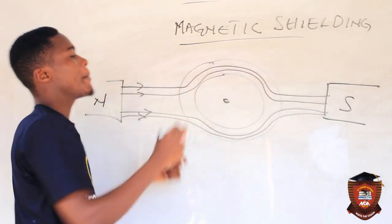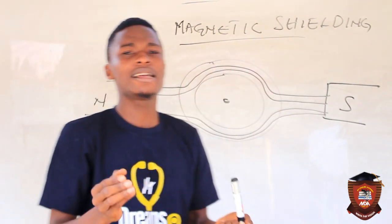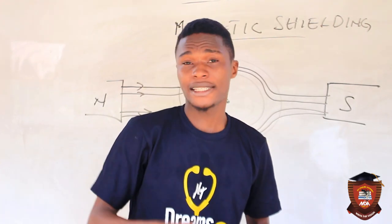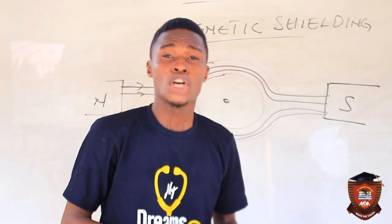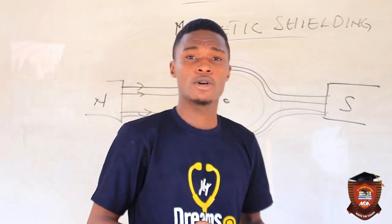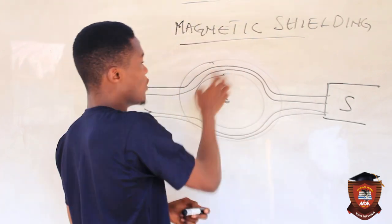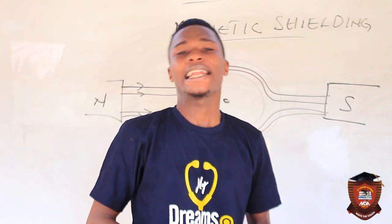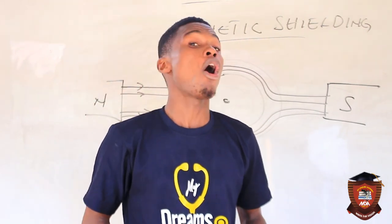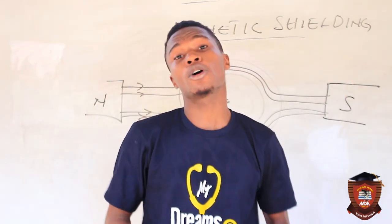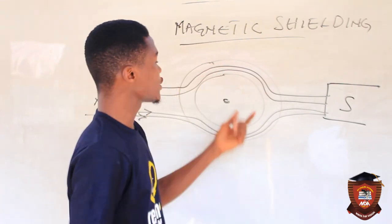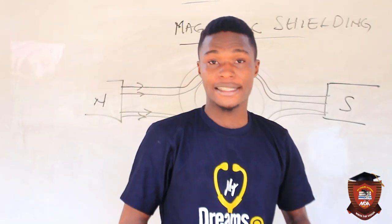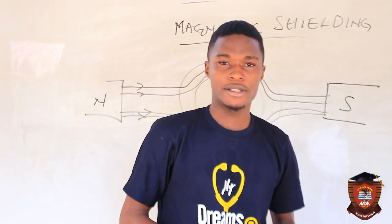Magnetic shielding is normally used to protect delicate materials from external magnetic fields. For example, the compass needle is normally placed in a soft iron ring so that it will not be affected by external magnetic fields. Similarly, cathode ray tubes are placed in soft iron rings to protect them from external magnetic fields.